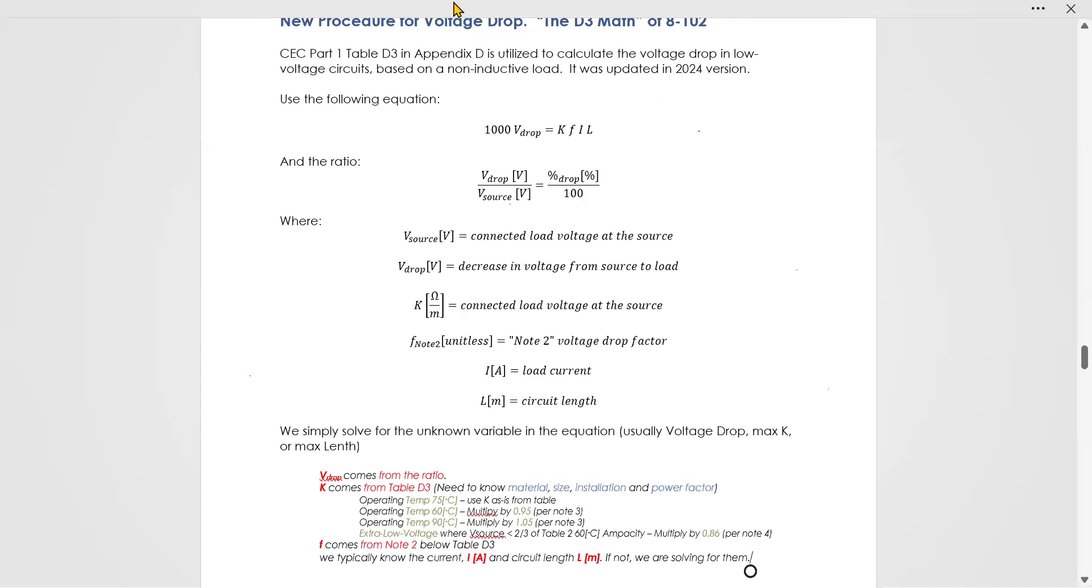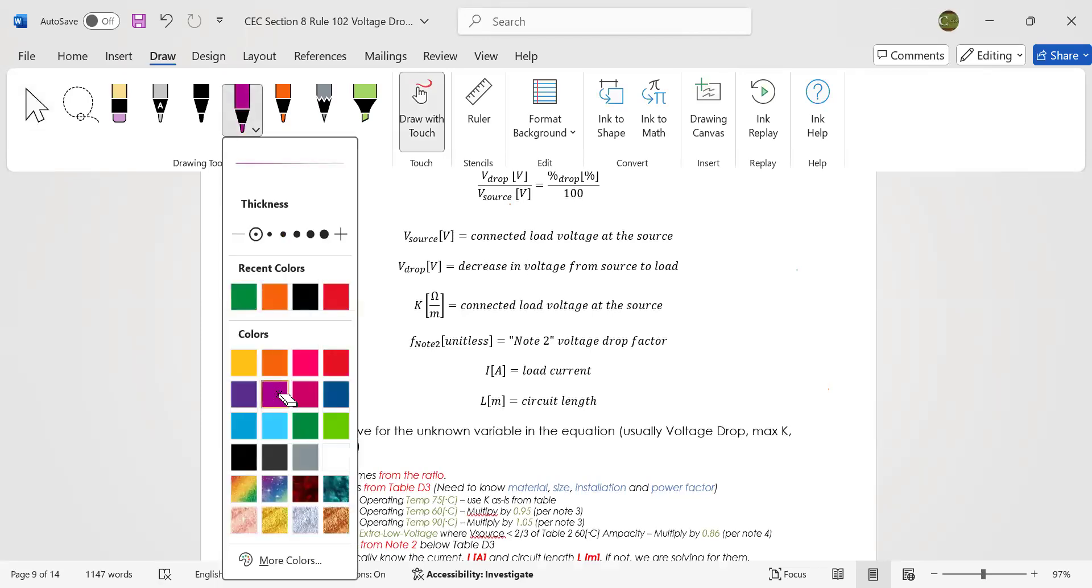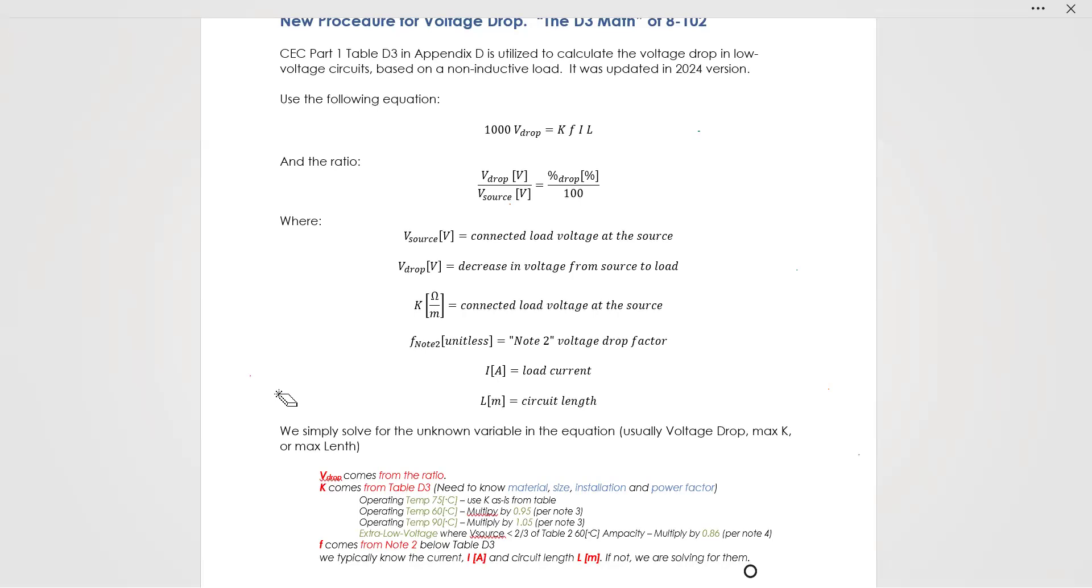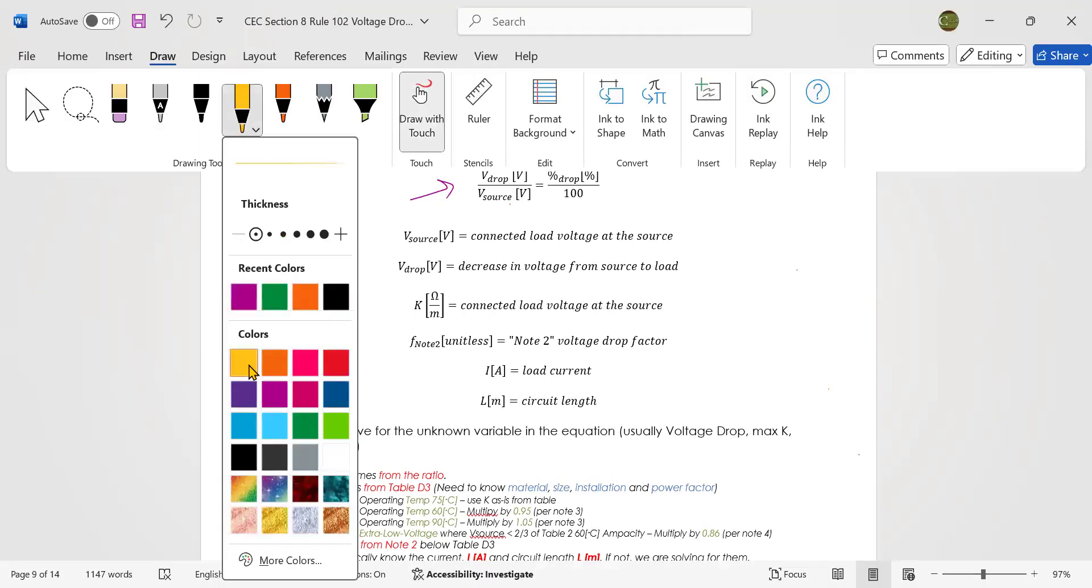Let's talk a little bit more about those variables, because they get a little bit more details - a couple more factors in there. So the voltage drop comes from this ratio, okay? This ratio. That's where voltage drop comes from. Easy peasy.